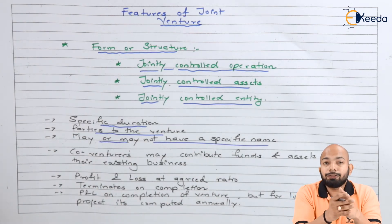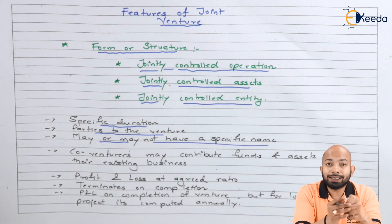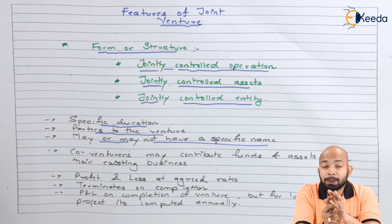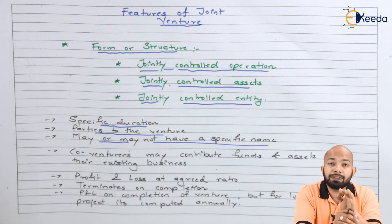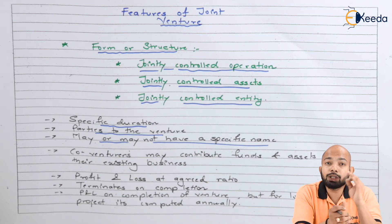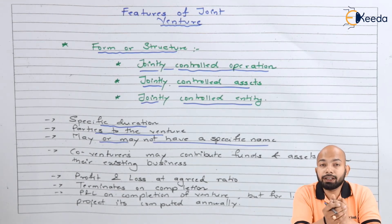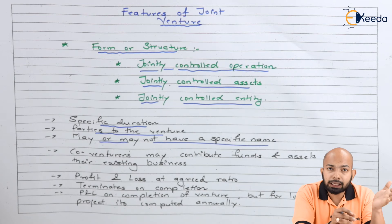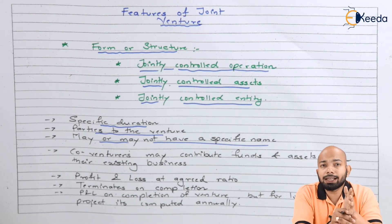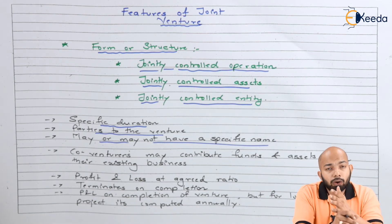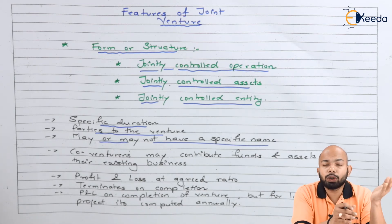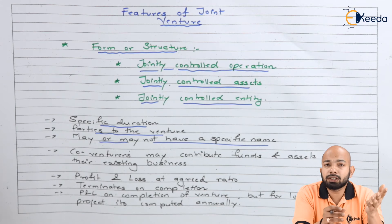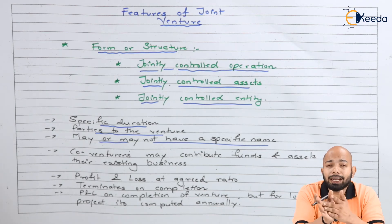The third feature is that a joint venture may or may not have a specific name. Not every joint venture will necessarily have a name for itself. It can have a name, or it can exist without one — just for a specific reason or purpose.